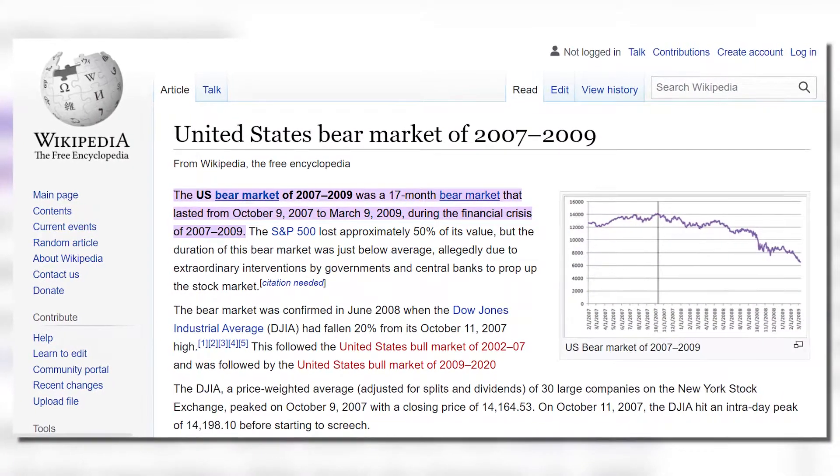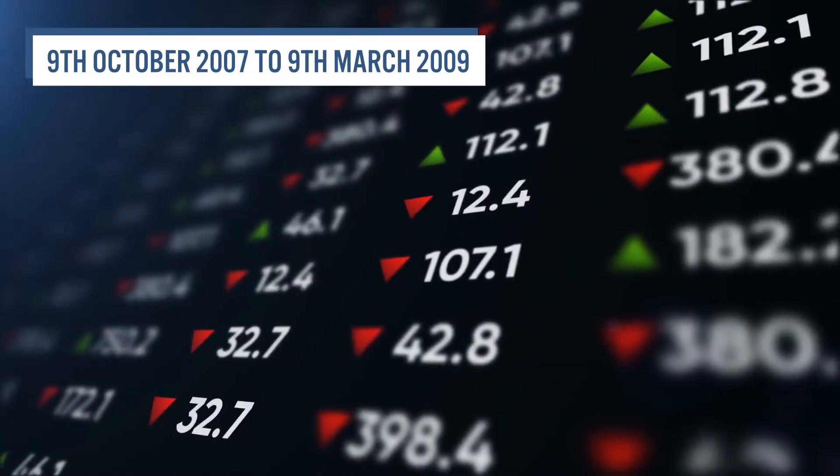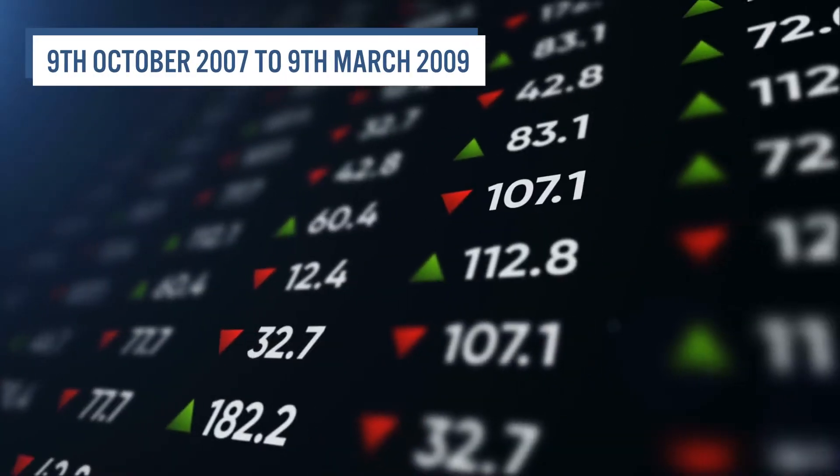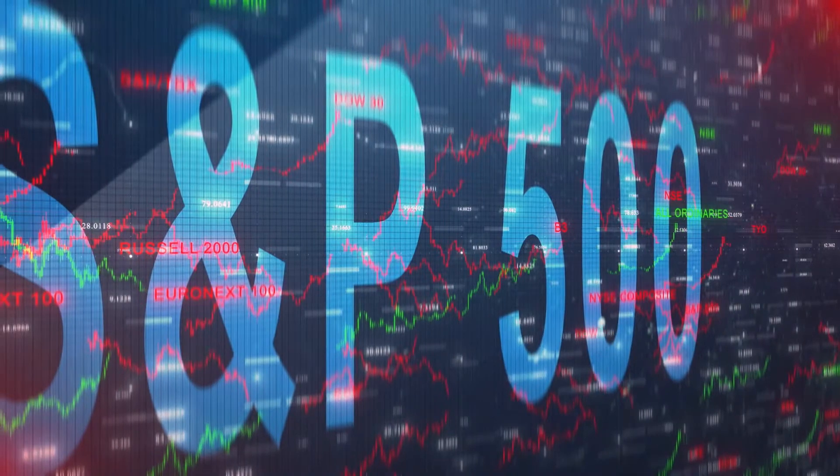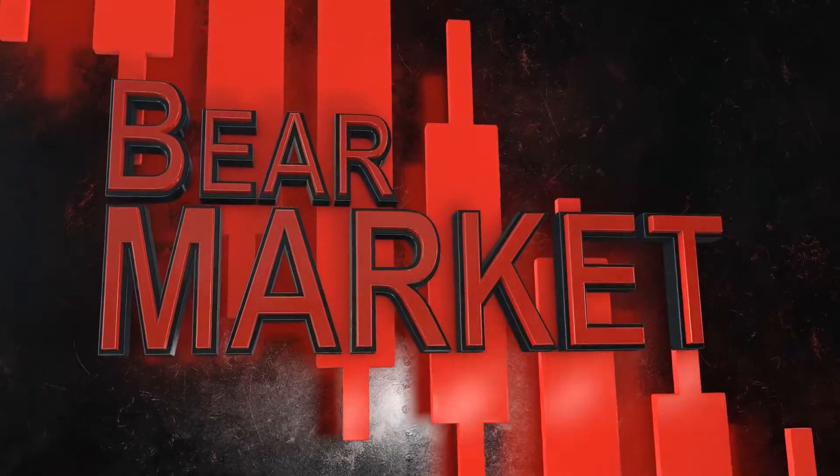The 2007-2009 US bear market crash lasted 17 months from October 9, 2007 to March 9, 2009. As a result, the S&P 500 lost around 50% of its value. Still, the duration of this bear market was below average due to extraordinary interventions by central and government banks to prop up the stock market.